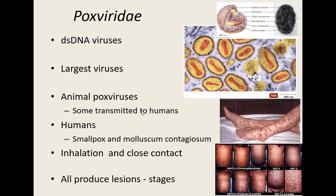We're going to start at the very top with the Poxviridae family. They're double-stranded viruses. Size-wise, they are the largest of the viruses that infect humans. Even some of these we could see underneath our microscopes — they are still much smaller than bacteria, but next to a bacterium we might actually be able to see a little spot.